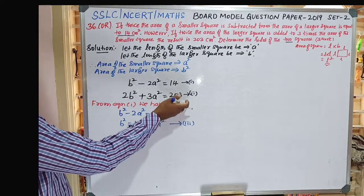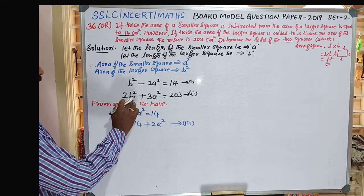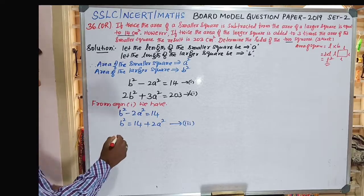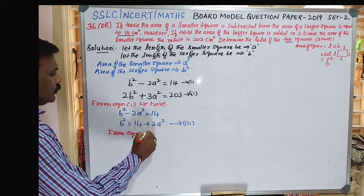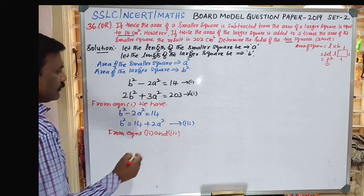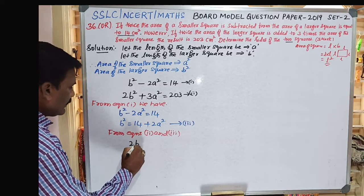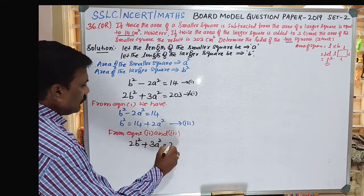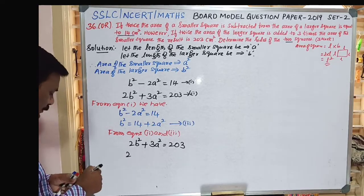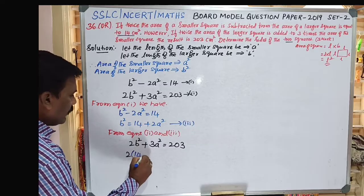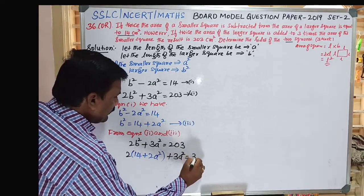From Equation 2 and Equation 3, we use the substitution method. Equation 2 is: 2B² + 3A² = 203. Substituting B² = 14 + 2A² from Equation 3 into Equation 2: 2(14 + 2A²) + 3A² = 203, which gives 28 + 4A² + 3A² = 203.